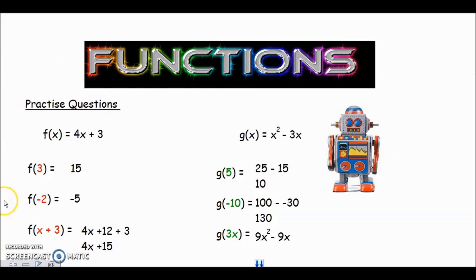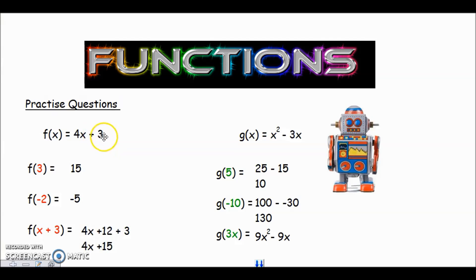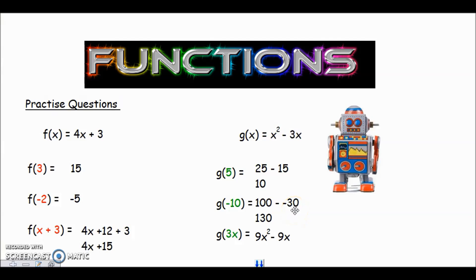For the first function f(x) = 4x + 3: put three in — four times three is 12, plus 3 is 15. Put minus two in — four times minus two is minus eight, plus three is minus five. Put x minus three in where x is: four lots of (x − 3) expands to 4x − 12, plus three on the end gives 4x − 9. For the second function: put 5 in — 5² is 25, minus 3 times 5 is minus 15, giving 10. Put minus 10 in — (−10)² is positive 100, minus 3 times (−10): two minuses make a plus giving +30, so the answer is 130. Check that on your calculator using the brackets method.